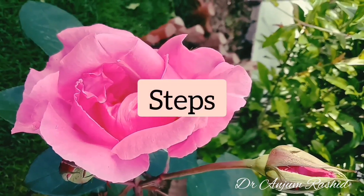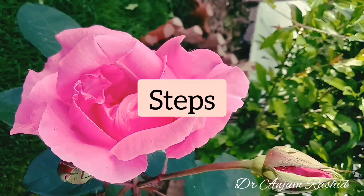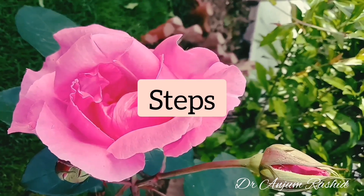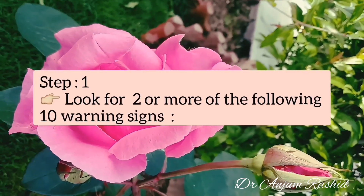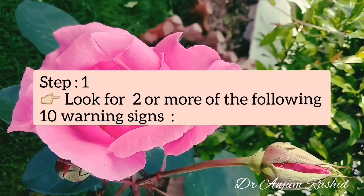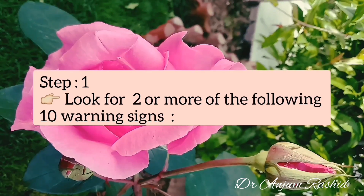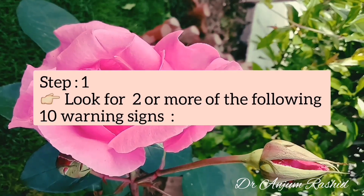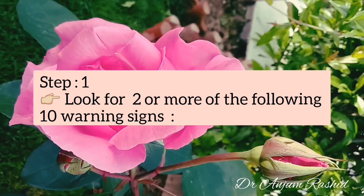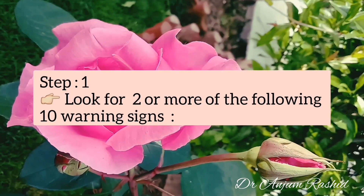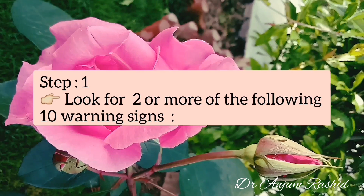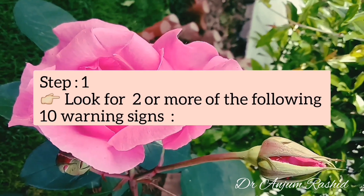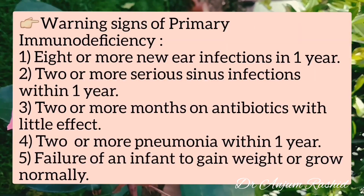To diagnose the specific category of primary immunodeficiency, the following steps should be followed. Primary immunodeficiency causes children and young adults to have infections that recur frequently and are usually hard to cure. The first step is to suspect a possible underlying primary immunodeficiency by looking for two or more of the following ten warning signs.